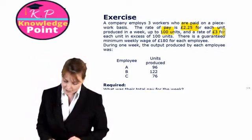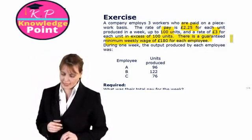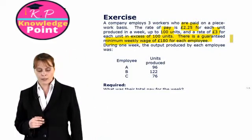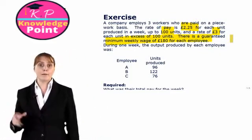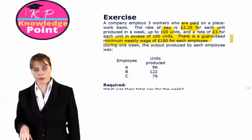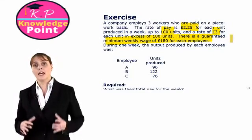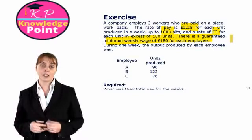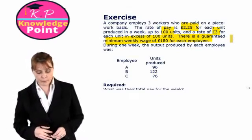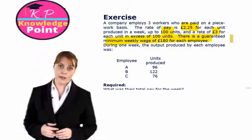There is a guaranteed minimum weekly wage of £180. Then we are given the output in a particular week for three different employees, and we need to calculate what their total wages will be based on their activity.